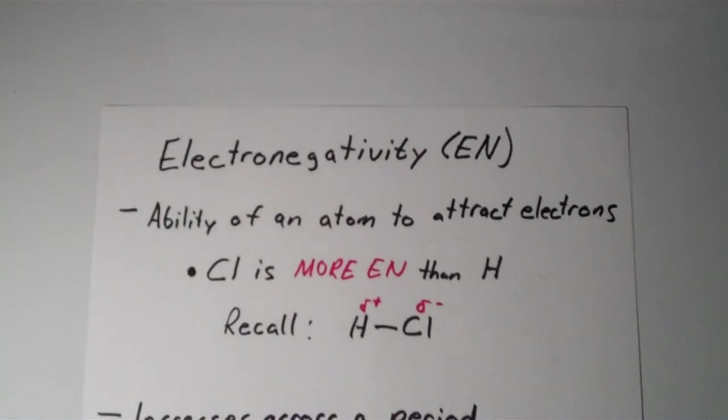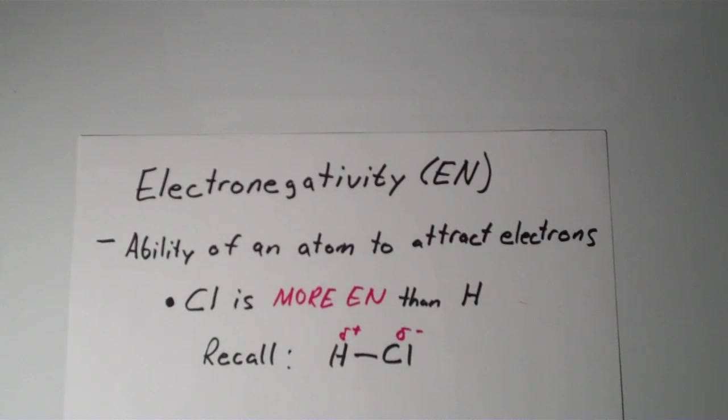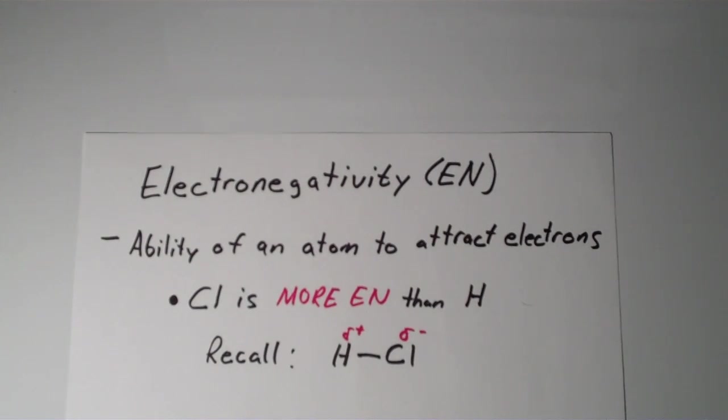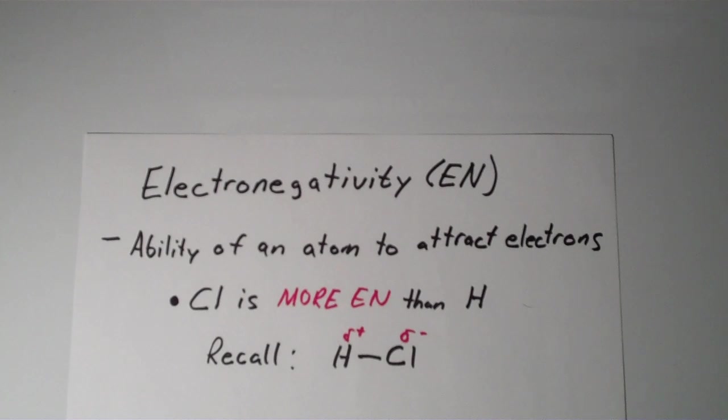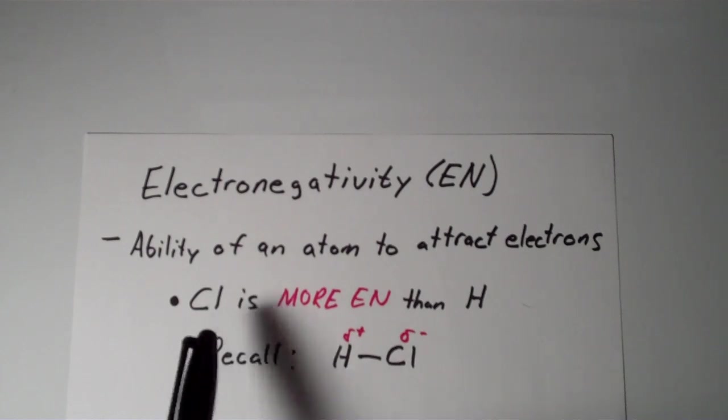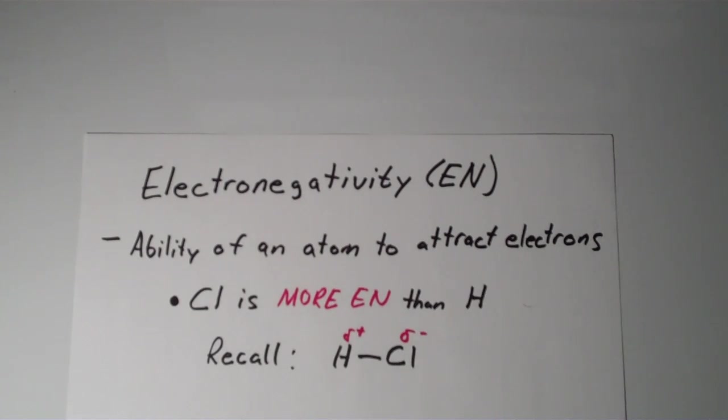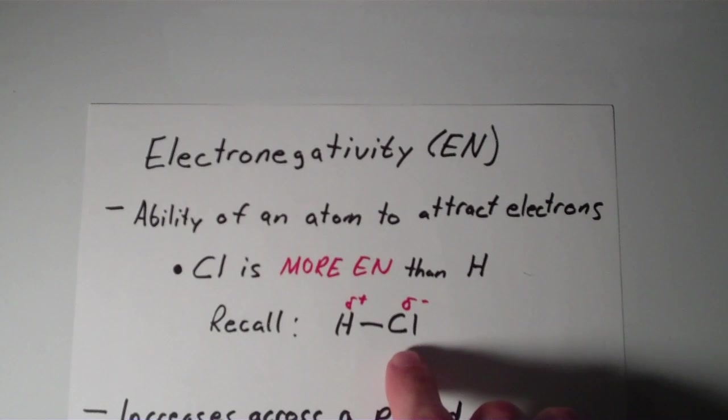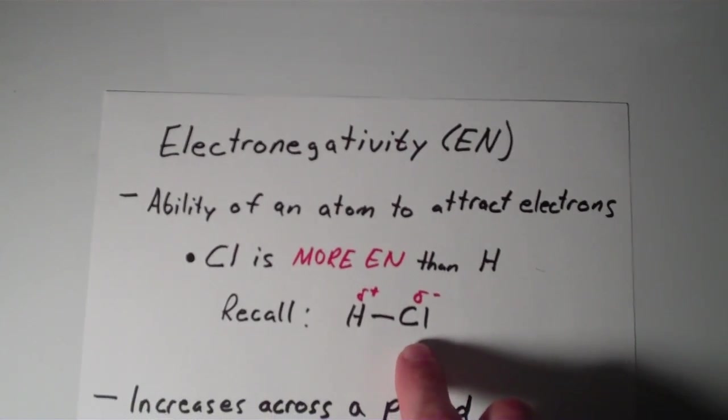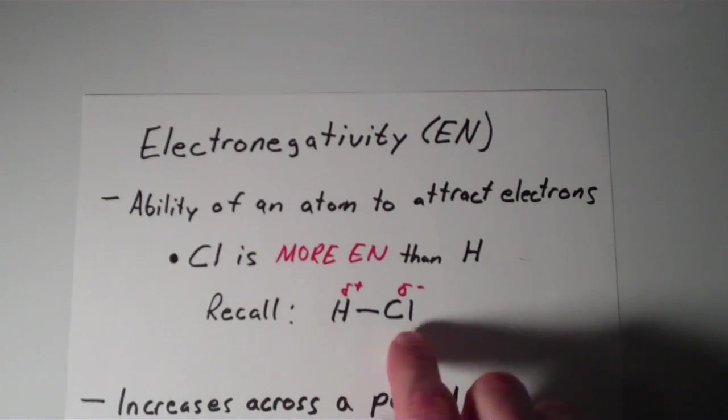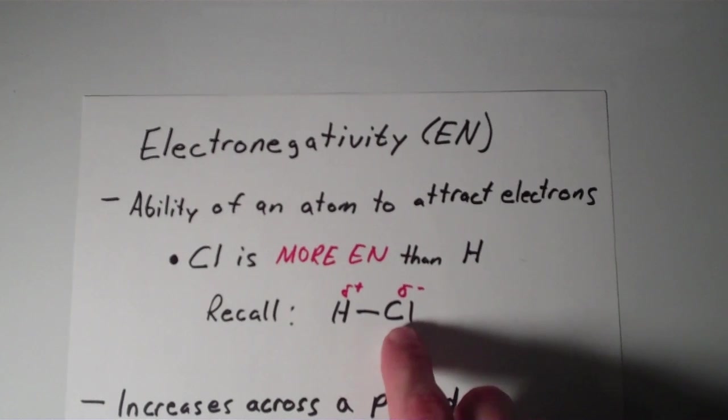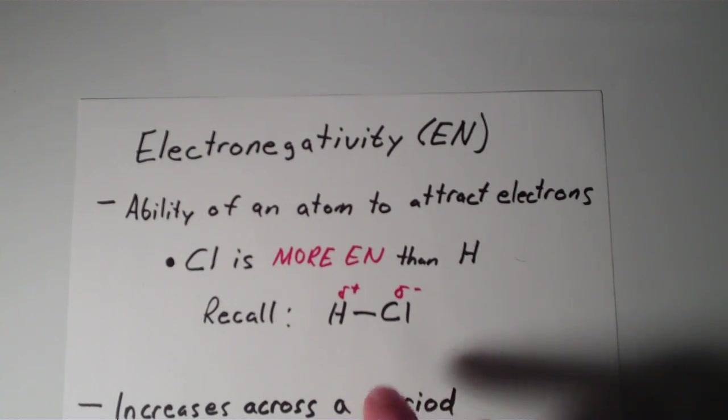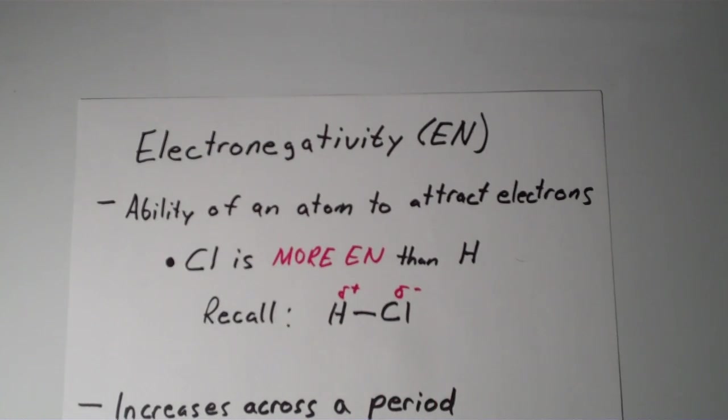The answer comes from a concept called electronegativity. Electronegativity is the ability of an atom to attract electrons to itself. In the case of hydrogen chloride, we say that chlorine is more electronegative than hydrogen, because chlorine attracts electrons to itself more. When you have HCl, the chlorine bears a partial negative charge. The reason is because chlorine is more electronegative than the hydrogen.